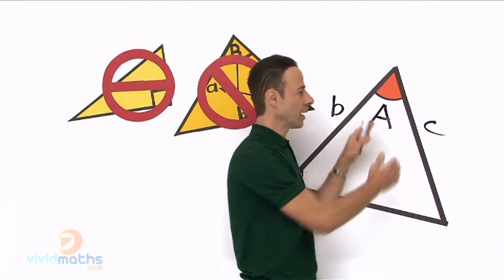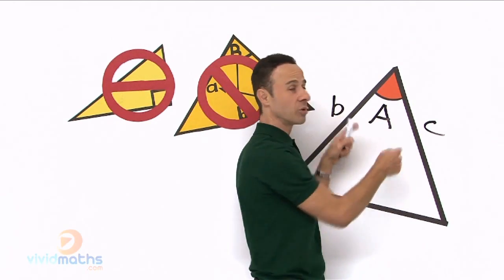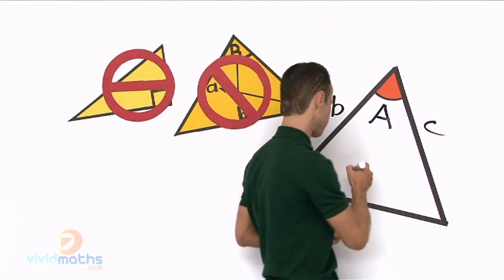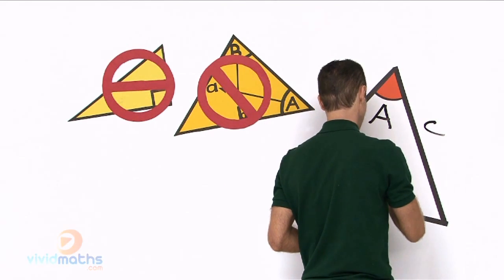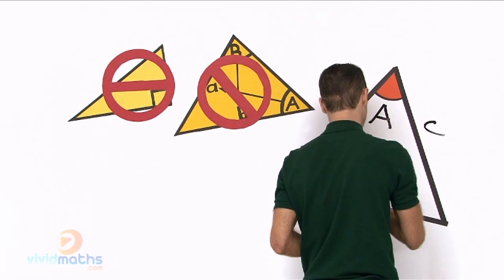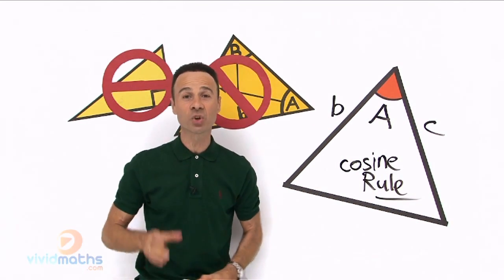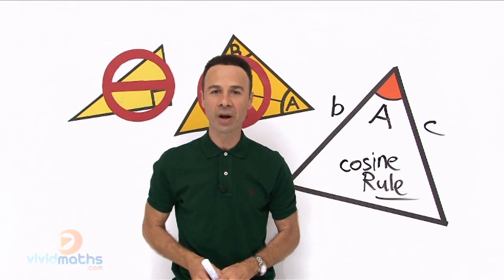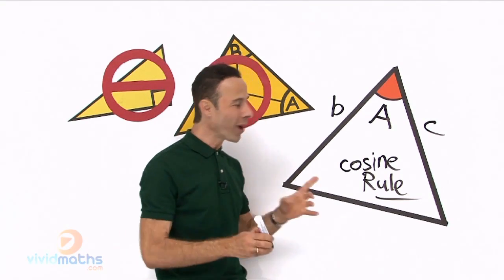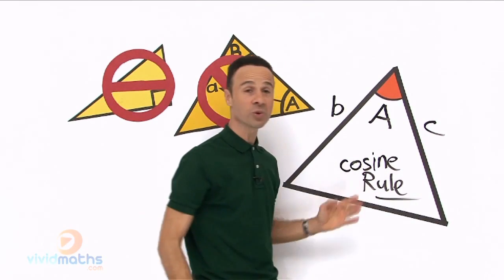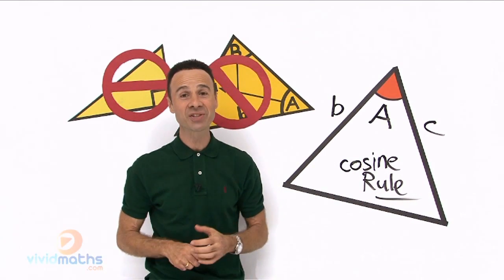You see this angle here is cozy between two lengths and if it's cozy there's a rule for it and it's called the cosine rule and it's a great tool for solving triangles, for tackling them when they give you an angle that's cozy between two lengths and this is also referred to as the cozy rule.